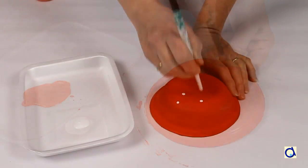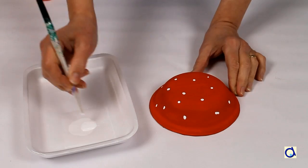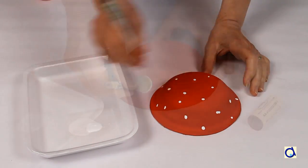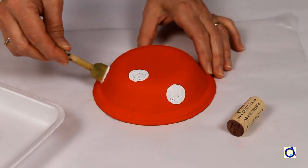The fly agaric has white dots on its cap. You can paint the white dots using the back of a brush. For a simplified version, make the white dots with a small round sponge or with a cork.